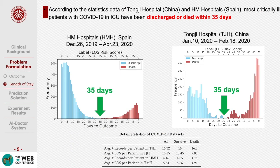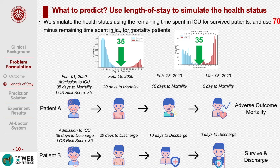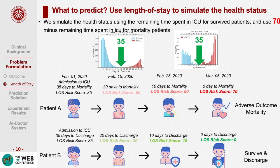According to statistics data from Tongji Hospital in China and HM Hospitals in Spain, most COVID-19 patients in ICU have been discharged or died within 35 days. As a result, we simulate the health status using the long-stay for survived patients and use 70 minus remaining time spent in ICU for mortality patients. This is a risk score between 0 and 70 for all patients. For example, if patient A will die after 10 days, the label is set to 60, a high-risk score. If patient B will be discharged after 10 days in ICU, the label is set to 10, a low-risk score. Patients with high-risk scores are facing a high probability of adverse outcomes and need emergency treatment.